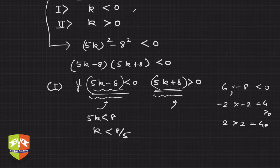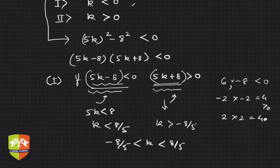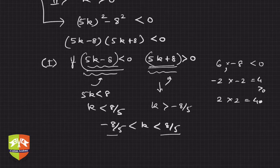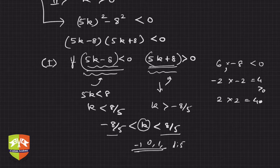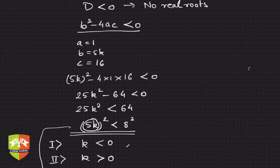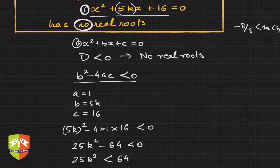From Case 1: 5k < 8 gives k < 8/5, and solving the other gives k > −8/5. So the value of k must satisfy −8/5 < k < 8/5. Any value between −8/5 and 8/5 — for example, 0, 1, −1, 1.1 — will satisfy the condition that the equation has no real roots. There are infinitely many possible values of k.